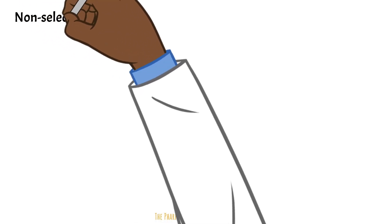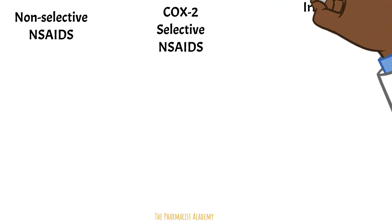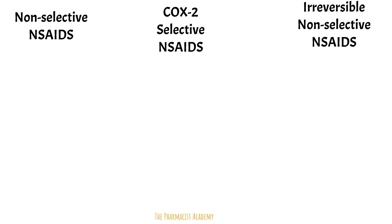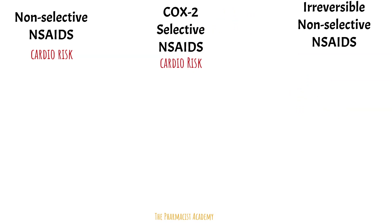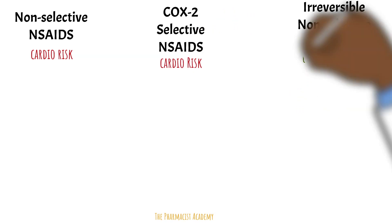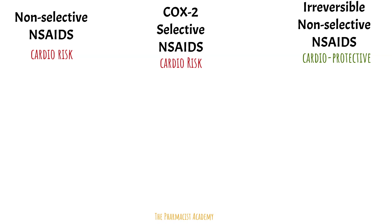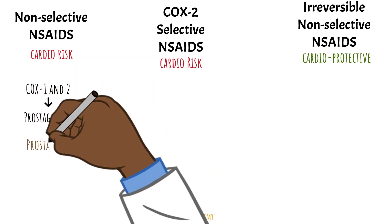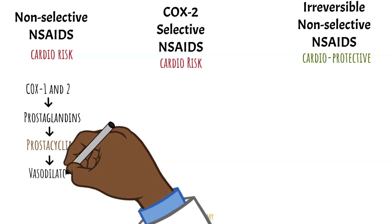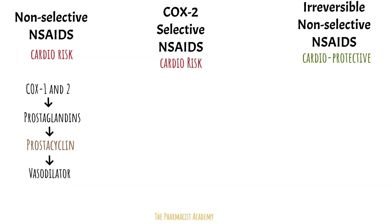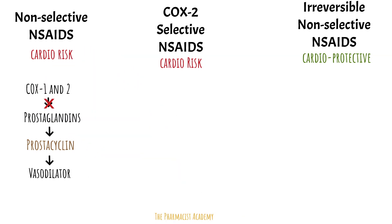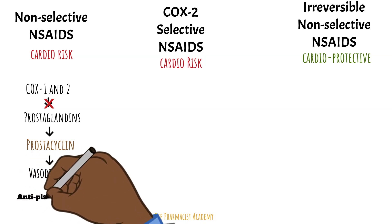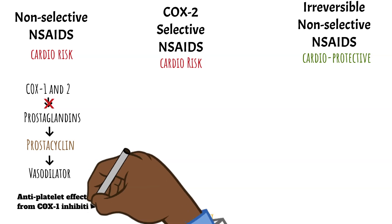There are three types of NSAIDs: the non-selectives, the COX-2 selectives, and the irreversible non-selective agents. In terms of cardiovascular risk, we consider the non-selectives and the COX-2 selectives, but the irreversible non-selectives are cardioprotective. COX-1 and COX-2 normally produce prostaglandins, which produce prostacyclin — a potent vasodilator that reduces blood pressure. These agents carry cardiovascular risk because they inhibit this pathway, eliminating production of prostacyclin, which normally reduces blood pressure. However, they also have the antiplatelet effect from COX-1 inhibition.